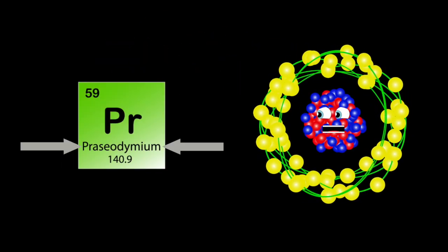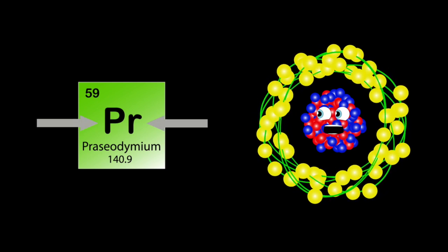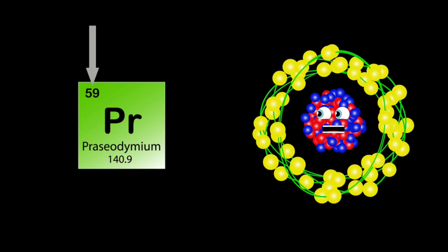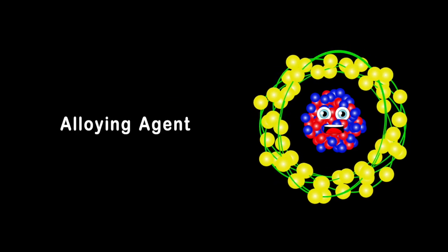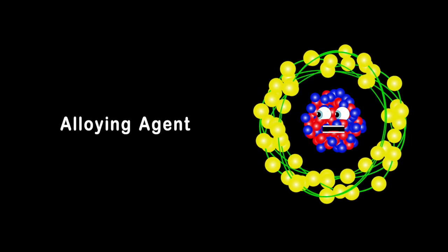I'm praseodymium, my symbol is PR, my atomic number's 59, 140's my atomic mass by far. My primary use is as an alloying agent, I make high strength metals used in aircraft engines.